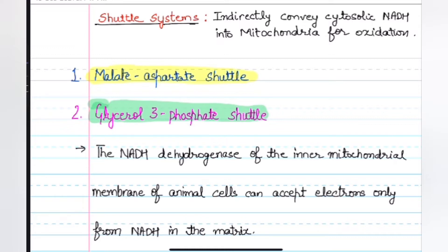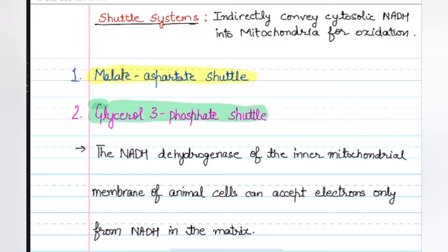In a shuttle system, the glucose molecule which undergoes glycolysis produces various intermediates like pyruvate and many other intermediates, along with that NADH is also produced. Indirectly, this shuttle system conveys cytosolic NADH, which is produced by glycolysis, into mitochondria for oxidation.